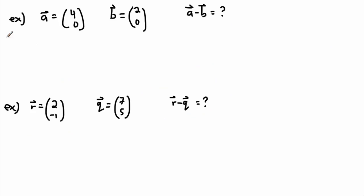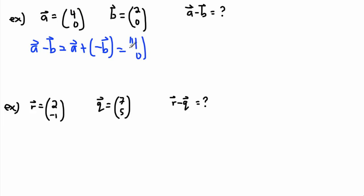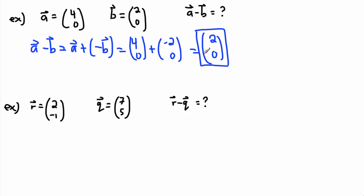So maybe we should do some examples. If we have a is 4, 0 and we have b is 2, 0, we can find a minus b. So a minus b is the same thing as a plus negative b. Vector a is just 4, 0. Plus negative b, which is negative 2, 0. Then I can just add these two numbers: 4 plus negative 2 is just 2, and this is 0. And there we go, there's my answer.